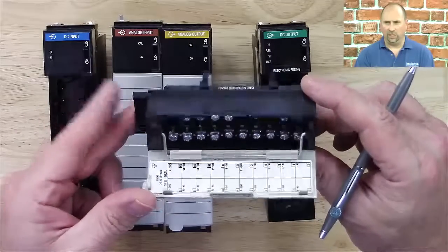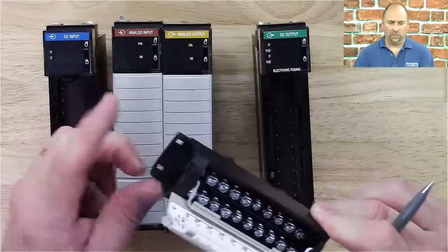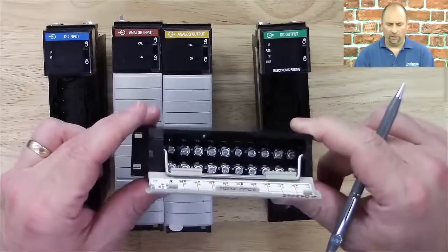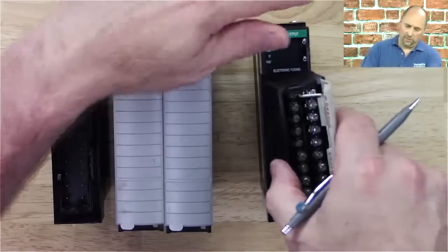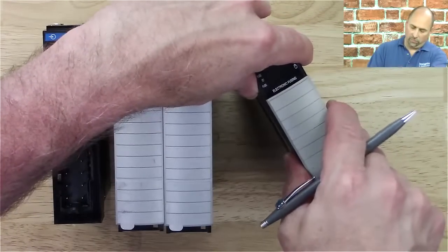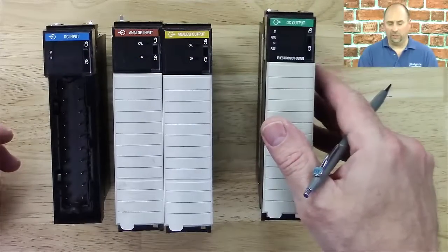You can see the terminal block here has a label on the inside. It also has a place to tie down your wires. And it just slides in just like this. You have to make sure that you have that unlock switch unlocked so you can put it in. But it just slides on super easy just like that.